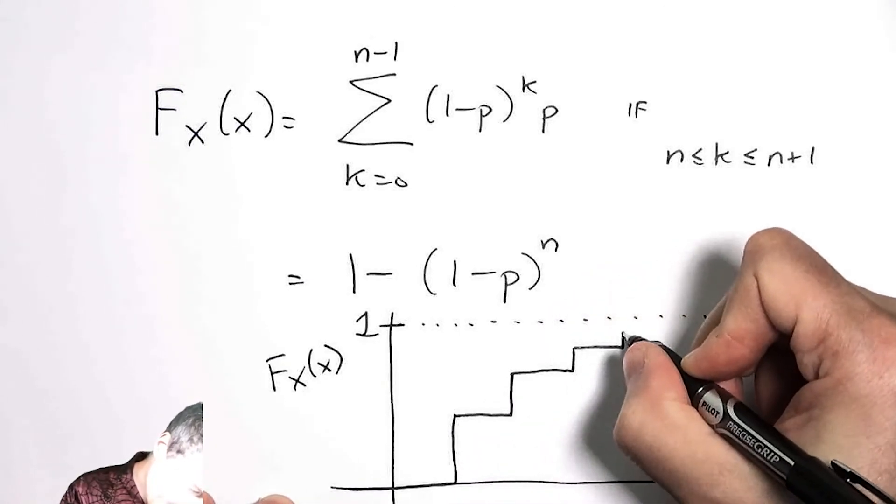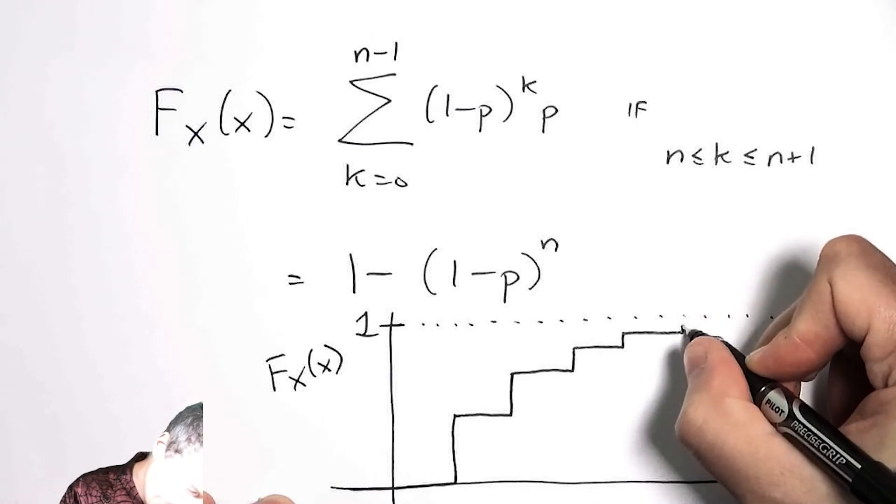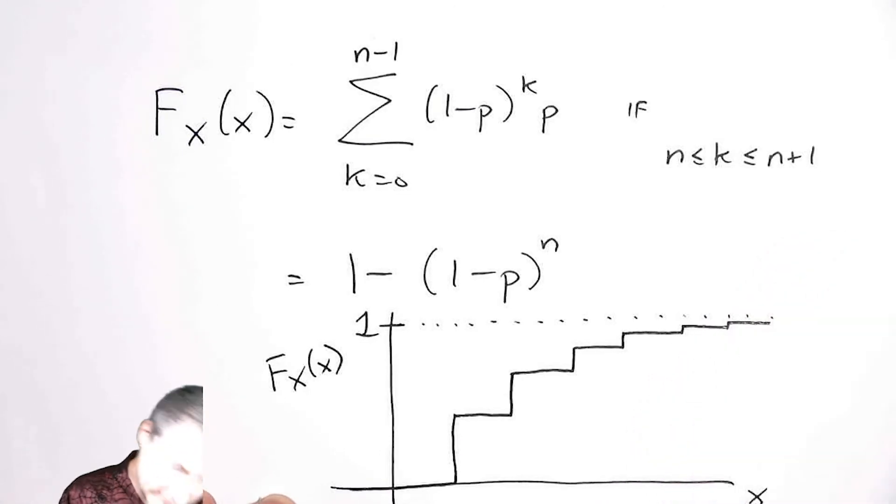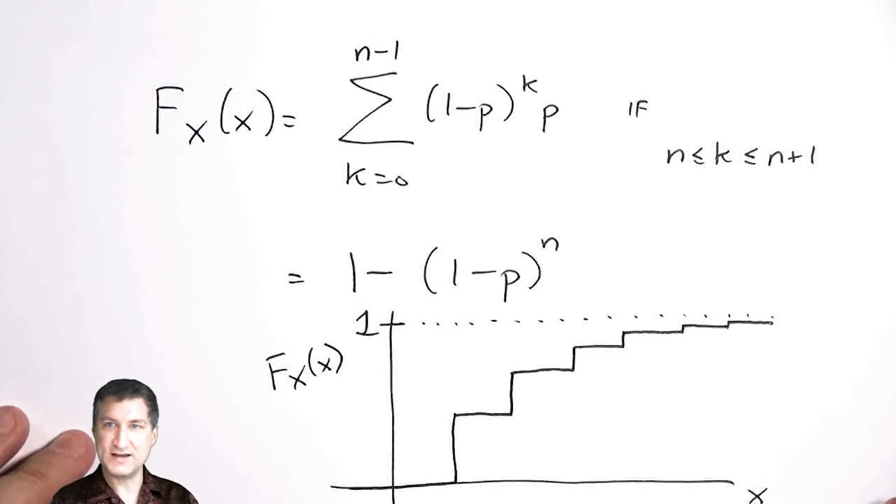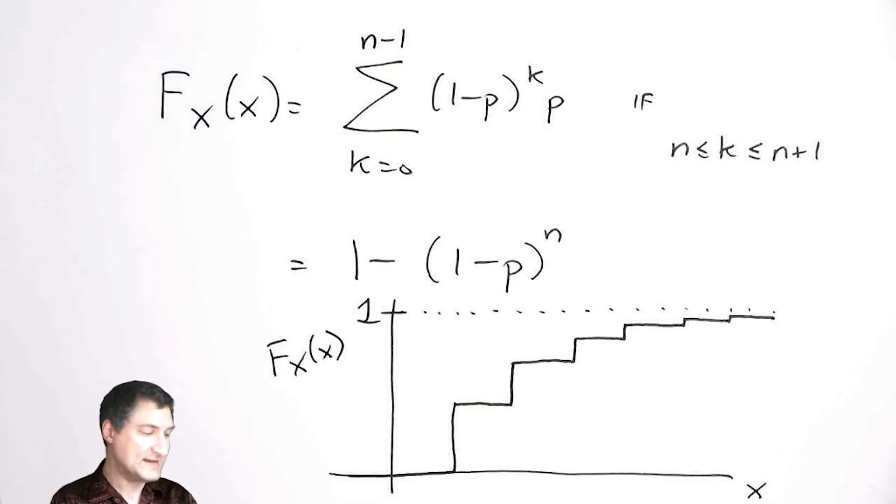And so what I would have would be something like an asymptote. So as n goes to infinity, the CDF tends to one as I know it has to, but I never quite get there.